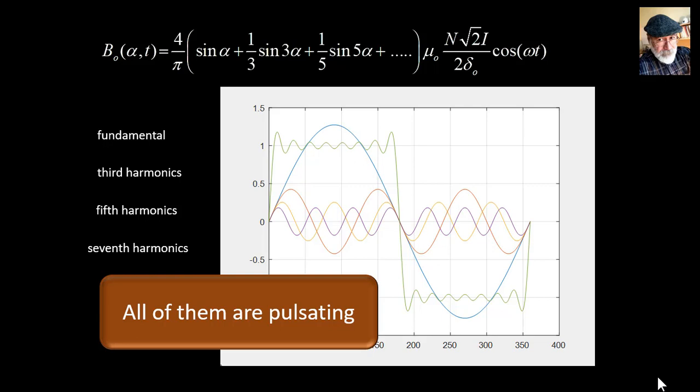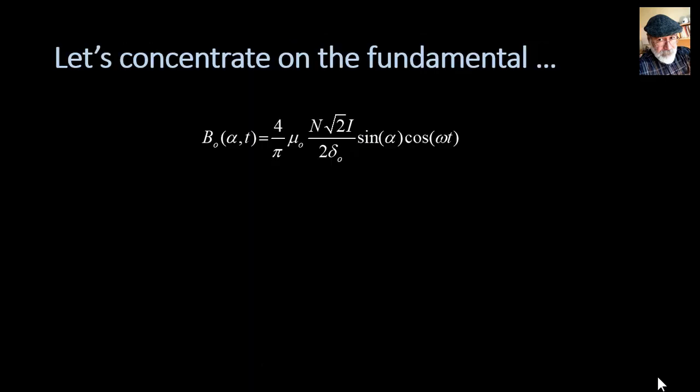Let's concentrate on the fundamental one, because it's the biggest one. The fundamental space component of the flux density in the air gap created by one coil at alpha equals zero. We write this term as Bmax sine alpha cosine omega t. That is the flux density in the air gap as a function of alpha, the position in the air gap, and of time.